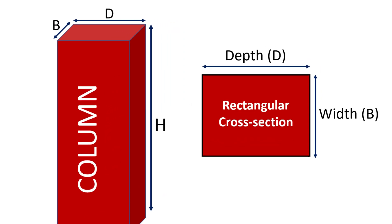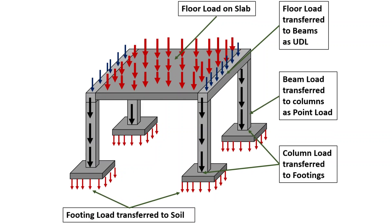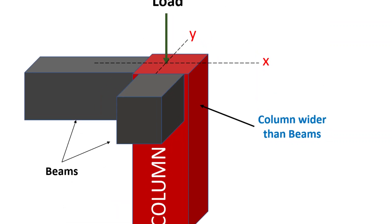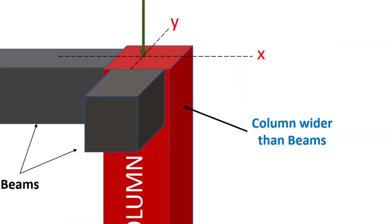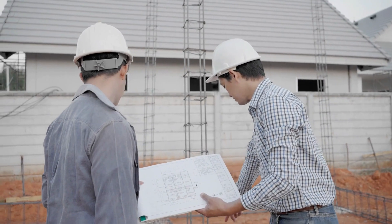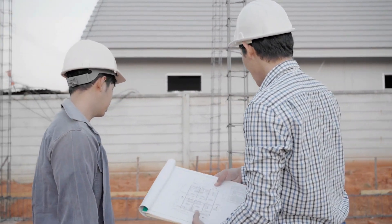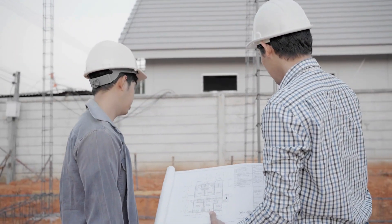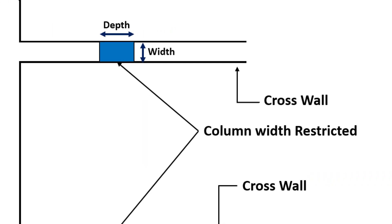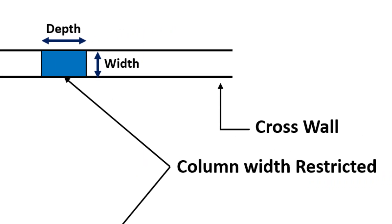Columns in a building usually have a rectangular cross section. To ensure effective load transfer, the columns need to be wider than the beams they support. However, some situations demand a greater cross section of the column to obtain a desired load carrying capacity. And since the width of the column is restricted, it becomes difficult to achieve the required cross section.